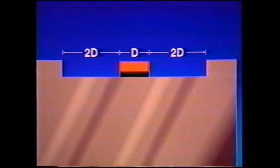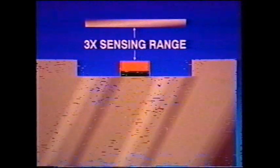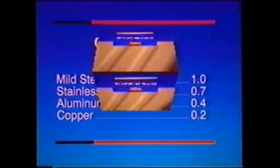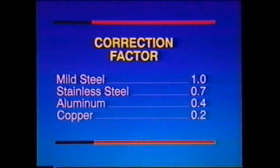If there is metal along two sides, keep it at a distance of 2 times the width of the active face. For all units, tubular or rectangular, keep any metal in front of the switch at a distance of 3 times the sensing range. These guidelines are used when the metal is steel. Remember that other metals reduce the sensing range and will have a correspondingly smaller effect on side sensing by a non-flush switch.